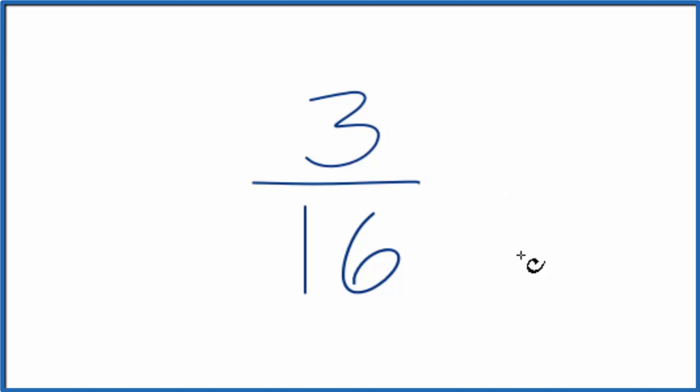One way to do that is we can look at the multiples for 3 and then 16. So for 3 really it's only 1 times 3. That's the only multiples we can get for 3 here.